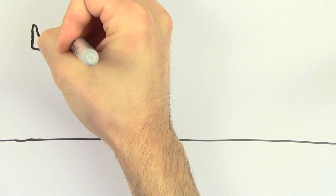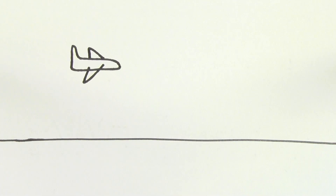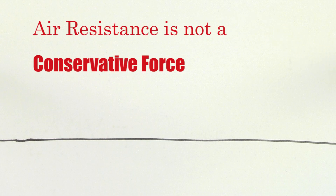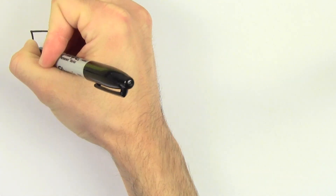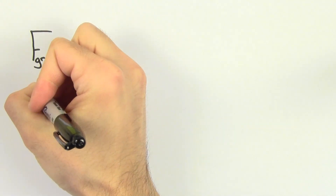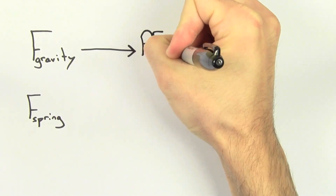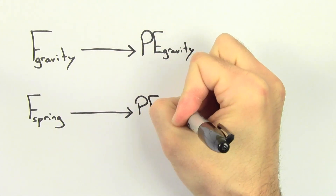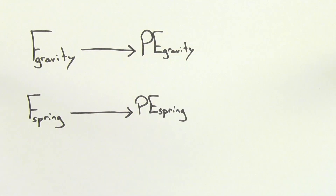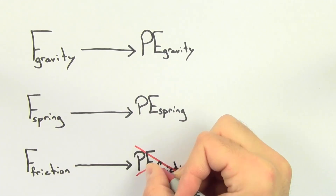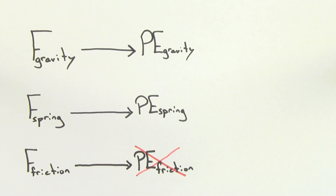Similarly, air resistance is not a conservative force since the work done by air resistance depends on the specifics of the path taken. It's useful to note that if a force is conservative, you could define a potential energy for that force. That's why conservative forces like gravity and spring forces have potential energies associated with them, and non-conservative forces like friction do not have potential energies associated with them.